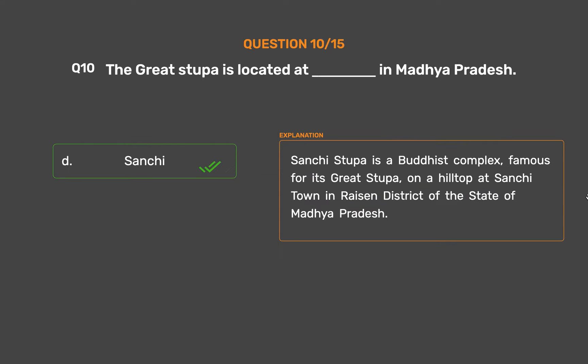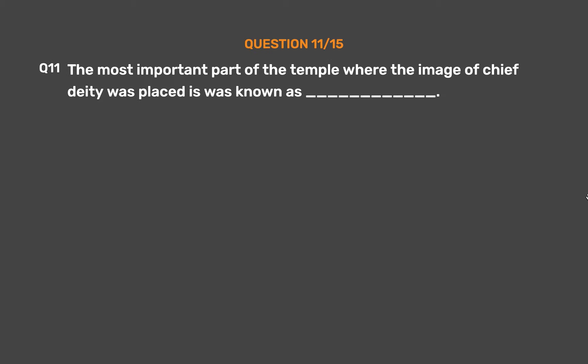The correct answer is Option D: Sanchi. The Sanchi Stupa is a Buddhist complex, famous for its great stupa, on a hilltop at Sanchi town in Raisen district of the state of Madhya Pradesh.